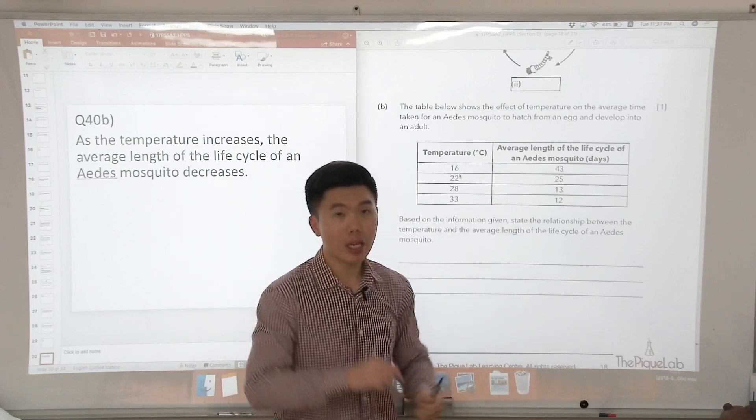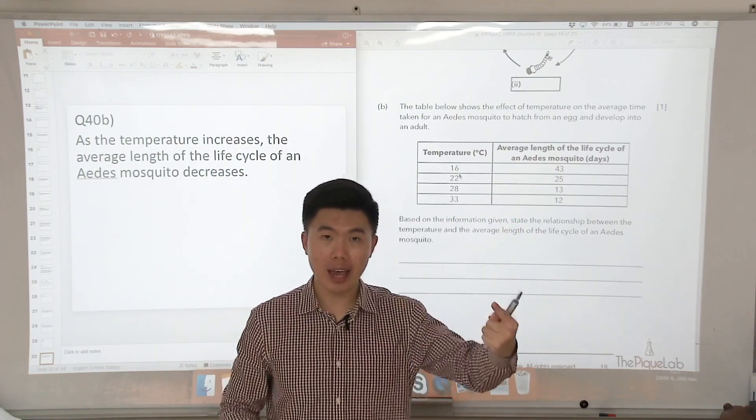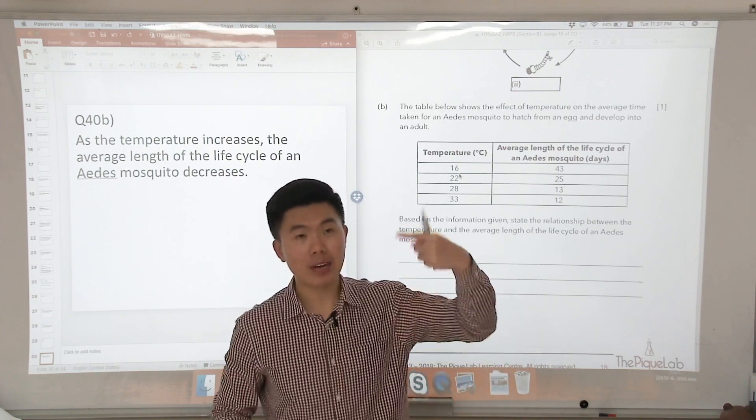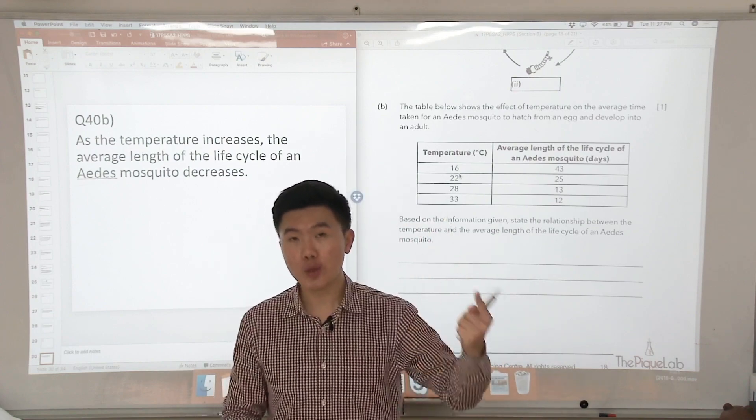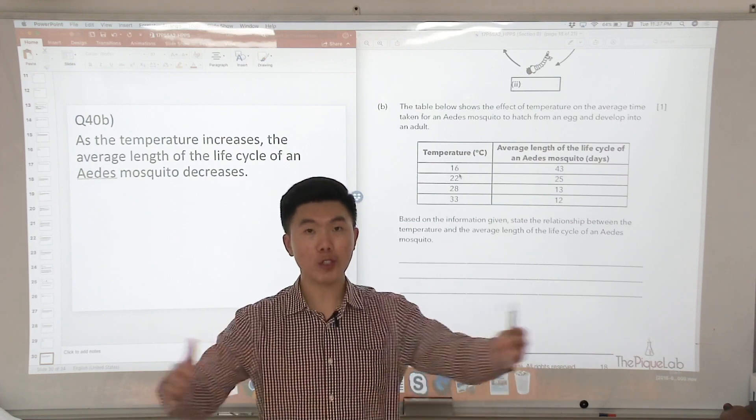So what does that mean? That means the eggs when it hatches to become larva, pupa, and adult, because the life cycle is shorter, it becomes an adult at a faster rate, which also means that since the life cycle is faster, the rate of reproduction is also faster.